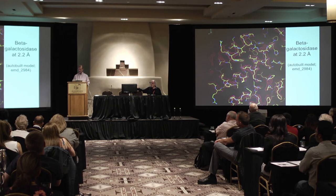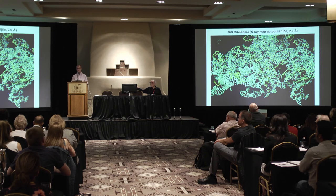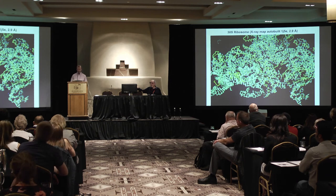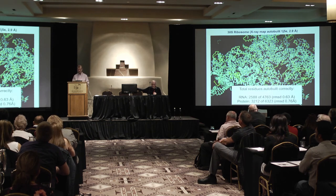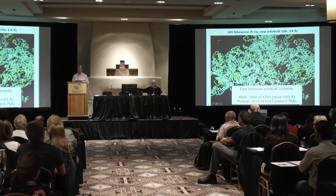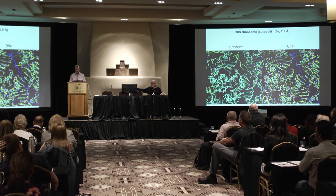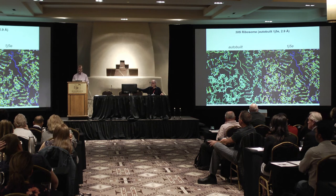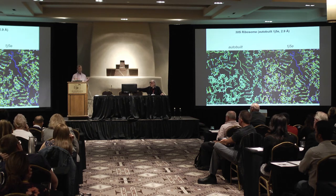Beta-galactosidase at 2.2 angstroms is a very nice structure — easy to build, about 85% complete. The 30S ribosome auto-built at 2.9 angstroms, with everything there — interpreting what it thinks is RNA as RNA and protein as protein. About half the residues are built correctly. The RMSD for those that are built is very good: for RNA, 0.6 angstroms; for protein, also about half, about 0.8 angstroms RMSD. The auto-built model and the deposited model are extremely similar — even the chain of proteins coming down is just the same.